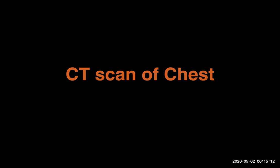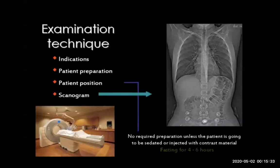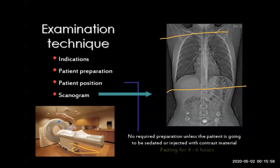The second modality is the CT scan of the chest. First, we do a scanogram — we place the patient on the table and perform a scout image just like an X-ray, called a scanogram, to identify the area of interest. If scanning the chest, we scan from the upper chest down here, localizing the region and including the adrenal glands, which are part of the chest CT examination.